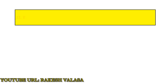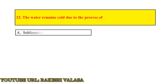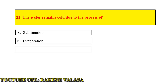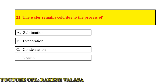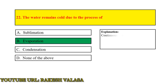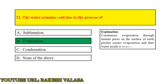Question number 22: The water remains cold due to the process of — Answer: Evaporation. Explanation: Continuous evaporation through minute pores on the surface of the earthen pot causes evaporation, and that's why water inside it remains cool.